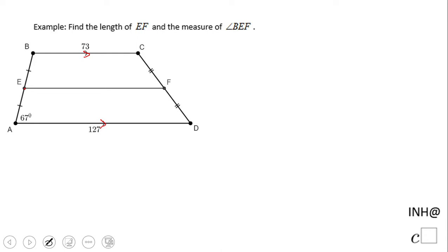Why do we call this EF a midsegment? Because E is the midpoint of AB. We see these two segments AE and EB are congruent. And also F is a midpoint of DC. So EF is called a midsegment.